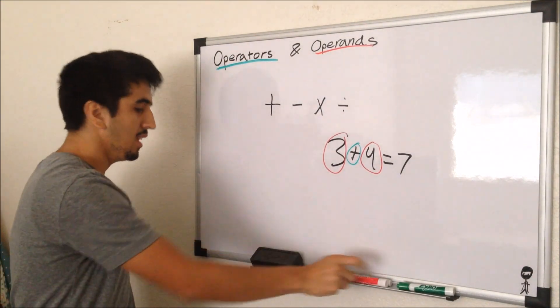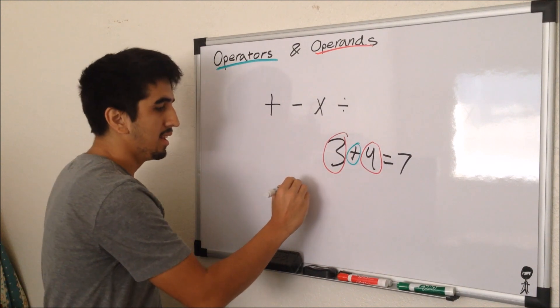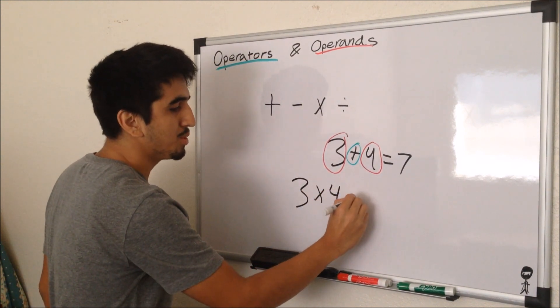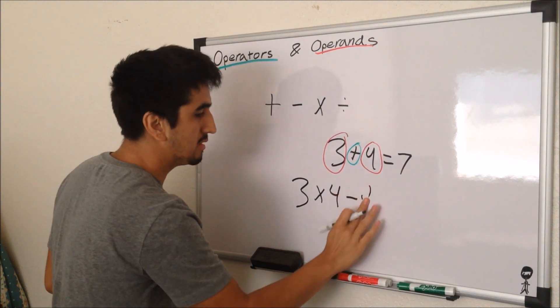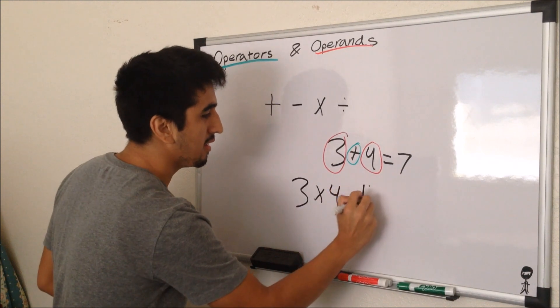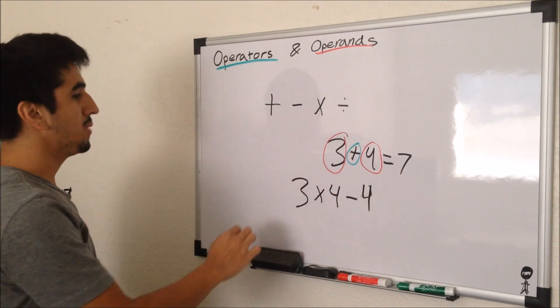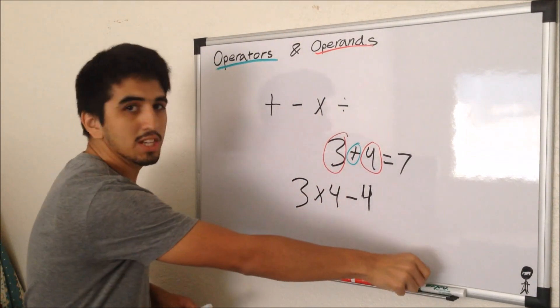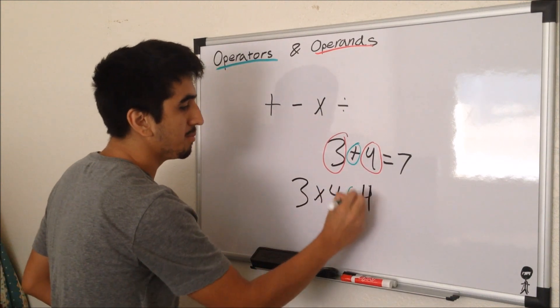Let's do one more. Let's say we had 3 multiplied by 4, then subtracted by 4. So we have two operators now: we have the multiplication sign and the subtraction sign, but they are still both operators telling us what to do.